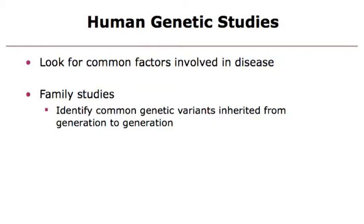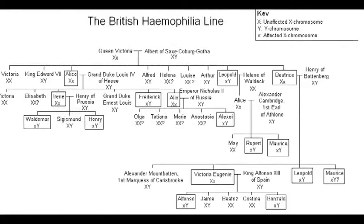Just to highlight one of the problems with human studies: this is the family tree of Queen Victoria. The people in boxes are people affected by haemophilia. You can track the genomics of all these offspring, follow the family history, and work out what gene causes haemophilia.